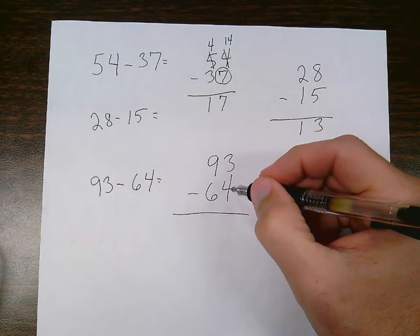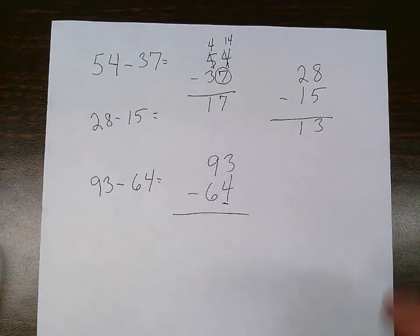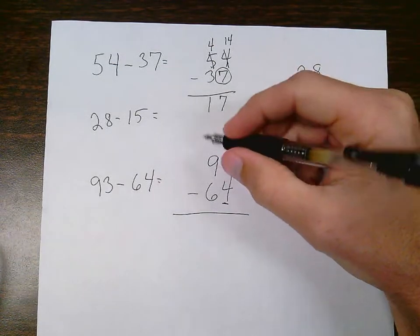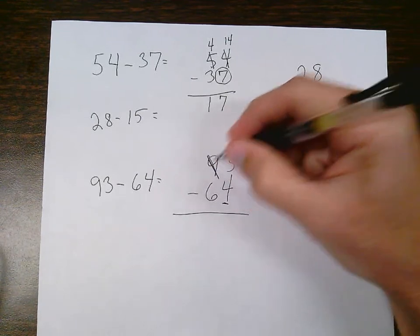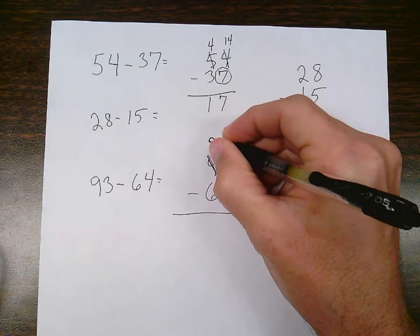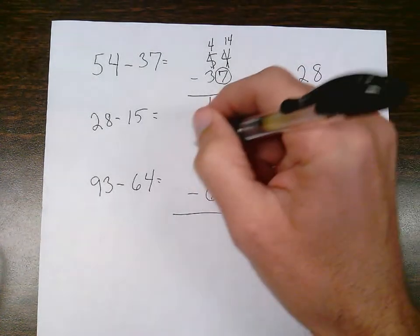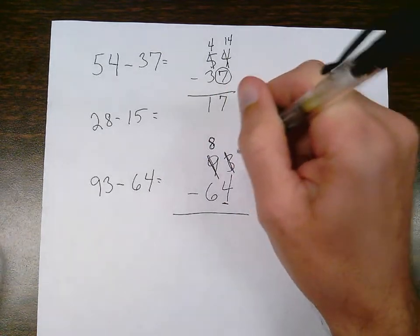I can't, because the bottom number is larger than the top. If I had 3 cookies, I could not give someone else 4. Whenever that happens, I must go to my neighbor and take one package of cookies. So I take one package from the neighbor, and then I give that package of cookies to the ones place.